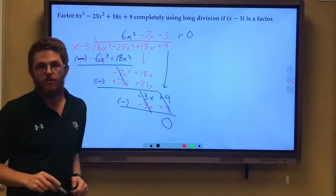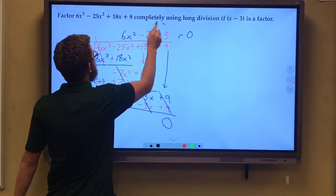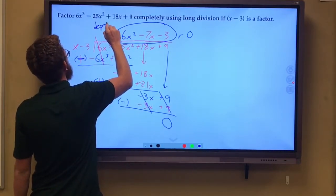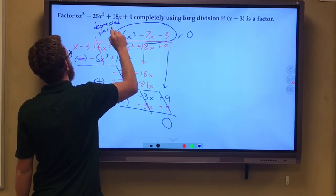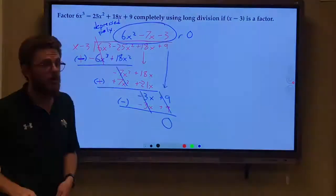When we get that remainder of 0, and we have divided, this is what we call the depressed polynomial. This is left over. This is what we call the depressed polynomial.